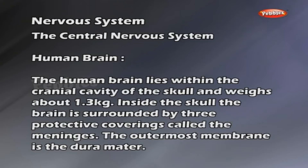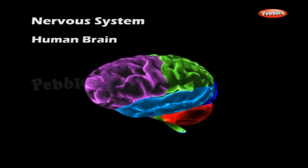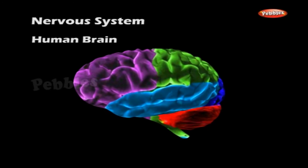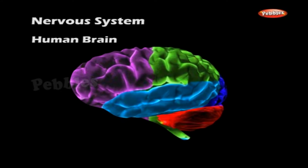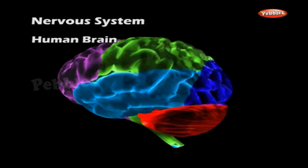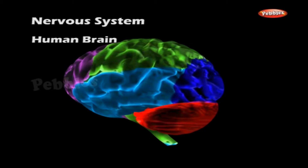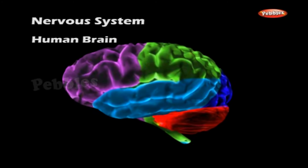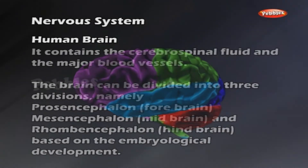The human brain lies within the cranial cavity of the skull and weighs about 1.3 kg. Inside the skull, the brain is surrounded by three protective coverings called the meninges. The outermost membrane is the dura mater. The arachnoid mater is the middle covering, and pia mater forms the innermost membrane closely applied to the brain. The space between the arachnoid membrane and pia mater is called the subarachnoid space. It contains the cerebrospinal fluid and the major blood vessels.